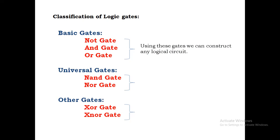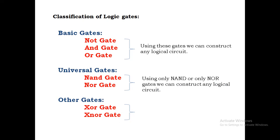Why are NOT, AND, and OR called basic gates? These three gates are very basic in nature — by using these gates we can construct any logical circuits. These three are the very basic building blocks to construct any logical circuits, that's why they are called basic gates. NAND gate and NOR gate are called universal gates because using only NAND gates, without using any other gates, we can construct any logical circuit.